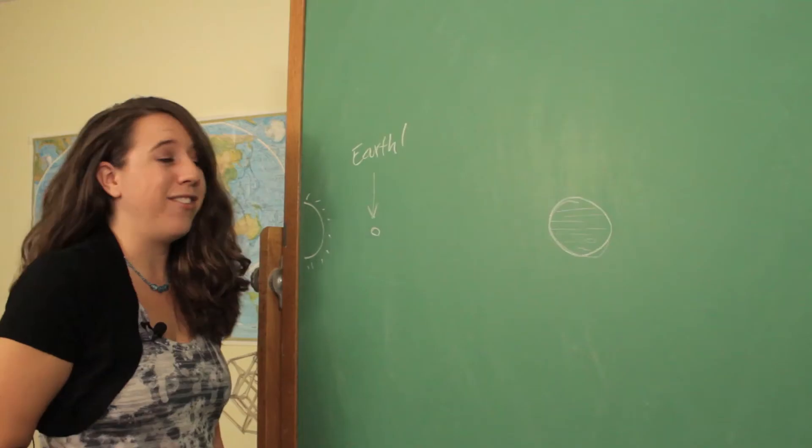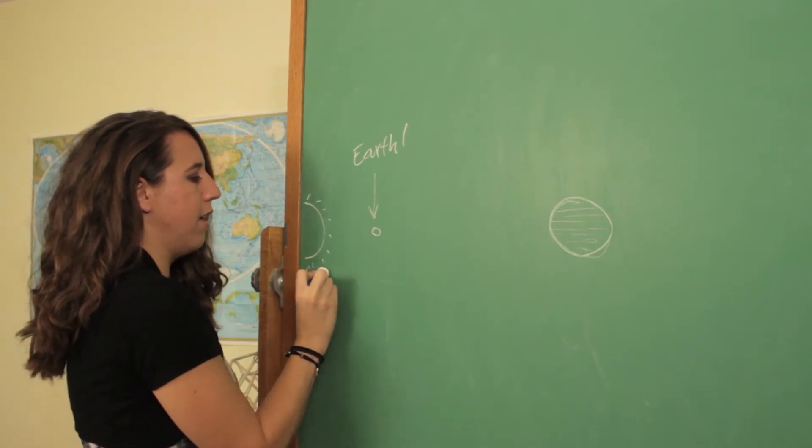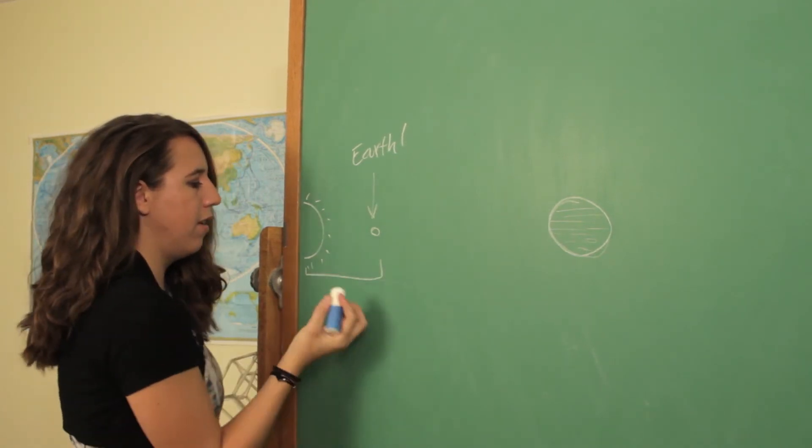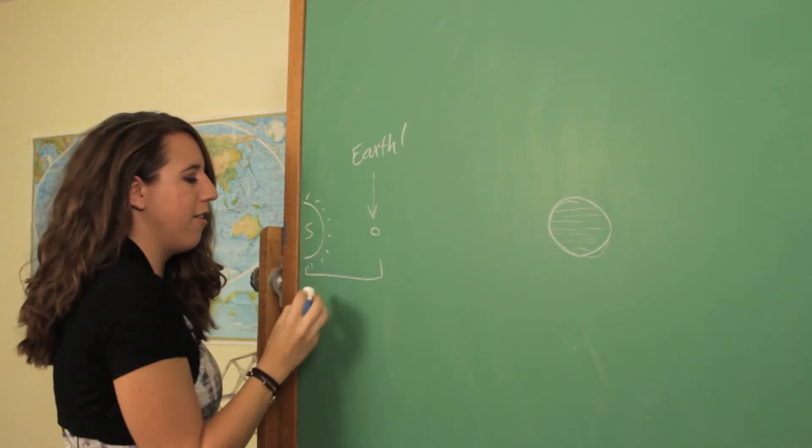First of all, we really need to define what an astronomical unit is, and it's really simple. It is the average distance during a year between the sun (an S right there) and the Earth.